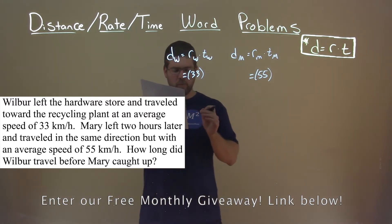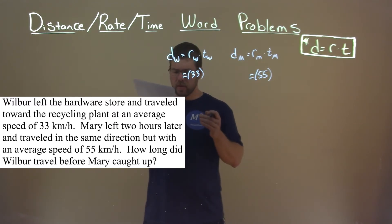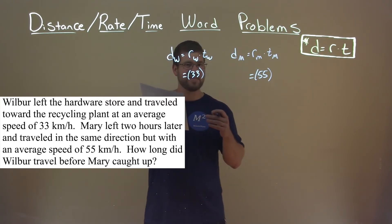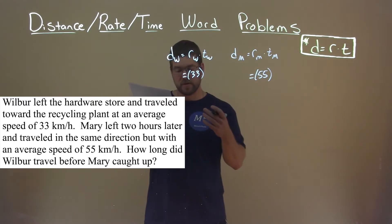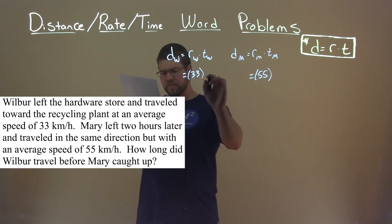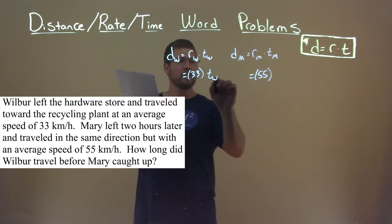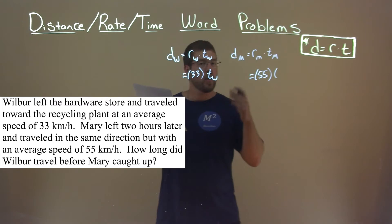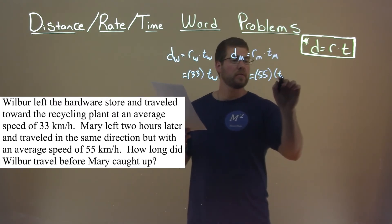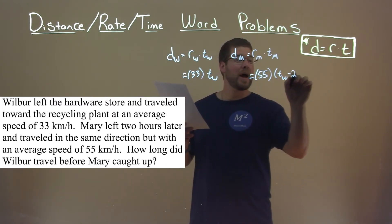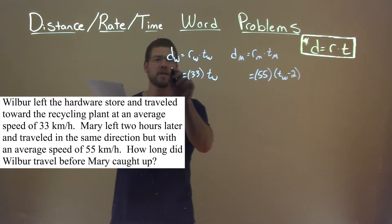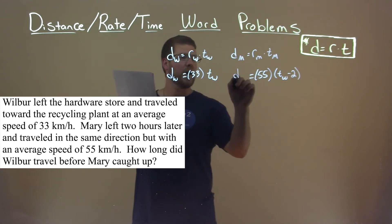But then what about our time? They tell us that Mary left two hours later and traveled in the same direction. But we don't actually know how long Wilbur was traveling — that's really what we're trying to find here. So T of W we don't know, but T of Mary we can write in terms of Wilbur's. Whatever Wilbur's total time was, if we subtract the two hours, we'd get the time that Mary was traveling. And so we have d_W here and d_M right there.